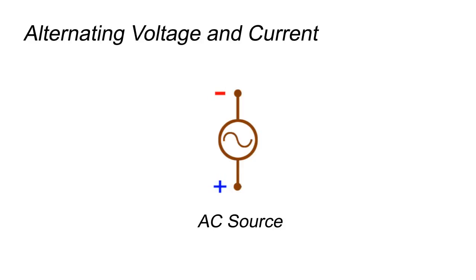Alternating Voltage and Current: When available voltage from an electrical source changes its direction periodically, the voltage is known as alternating voltage and the source from which it is available is known as AC source.